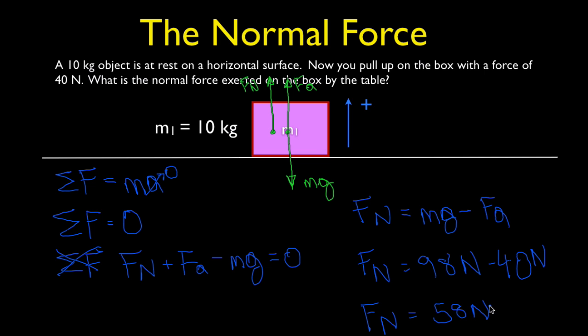Comparing the three cases: in the first case, the normal force was equal to the weight at 98 Newtons. In the second case, the normal force was more than the weight at 138 Newtons. In this third case, because we're pulling up, the normal force is less than the weight at 58 Newtons.